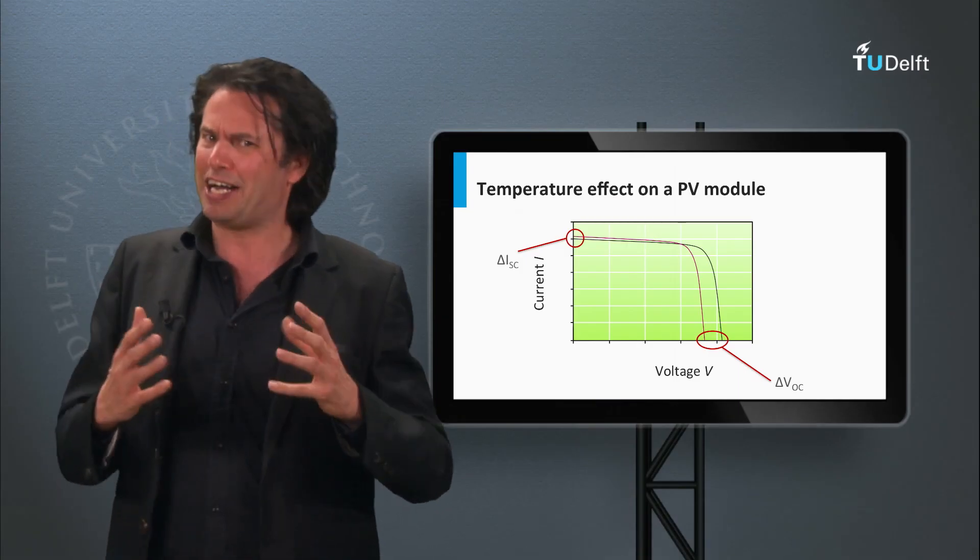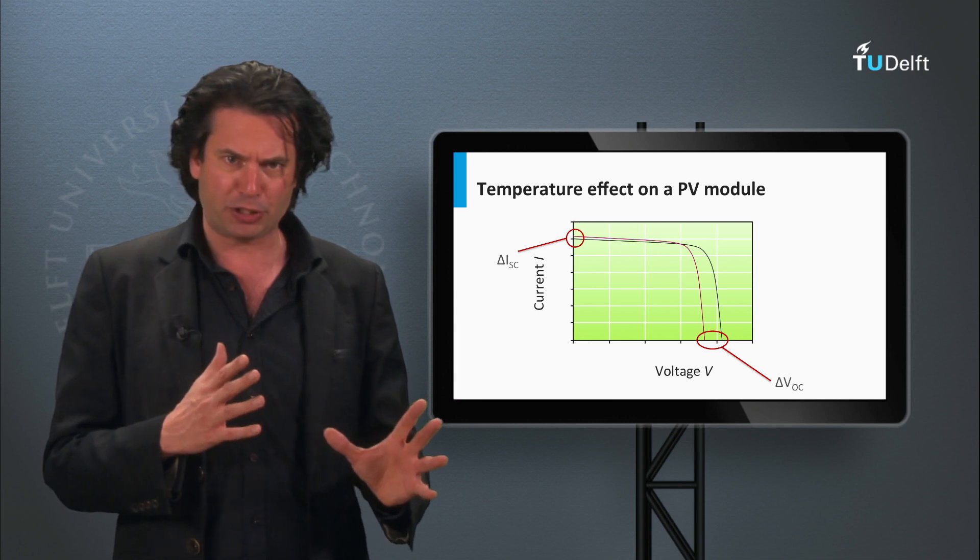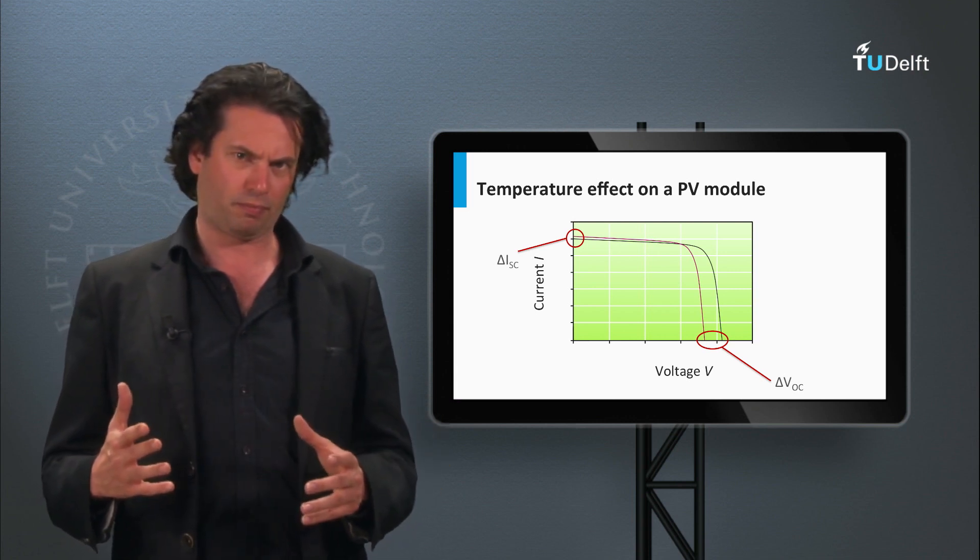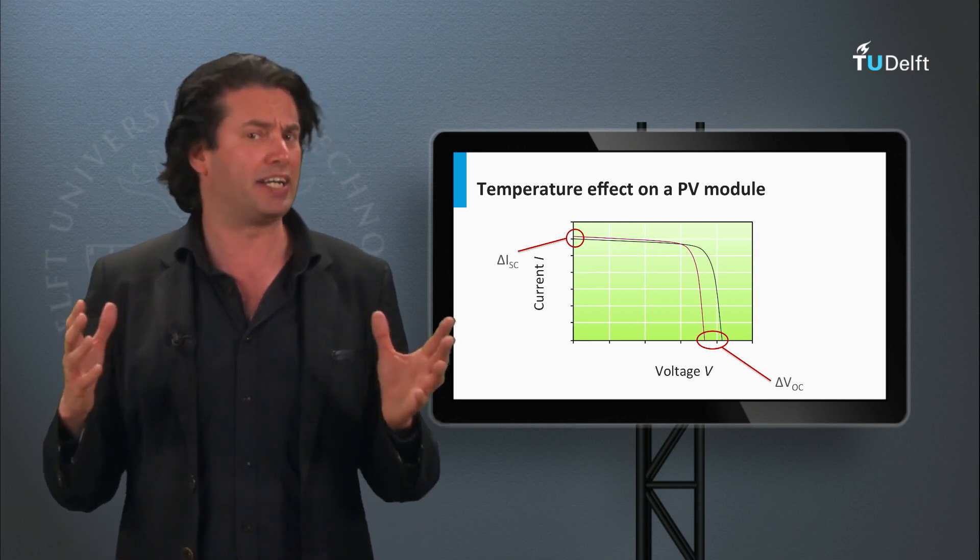So now you have an idea of the effect of temperature on the PV output. But how do we quantify this effect?